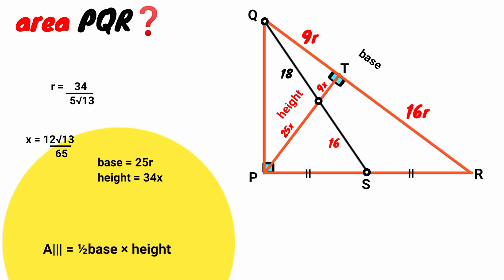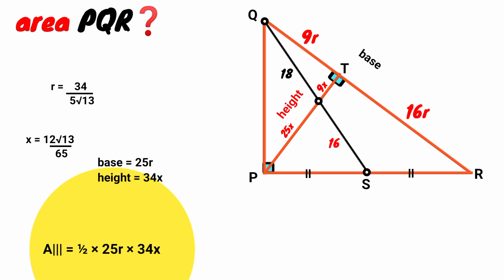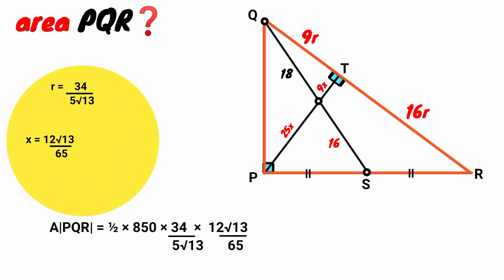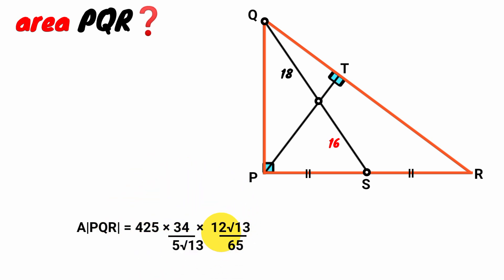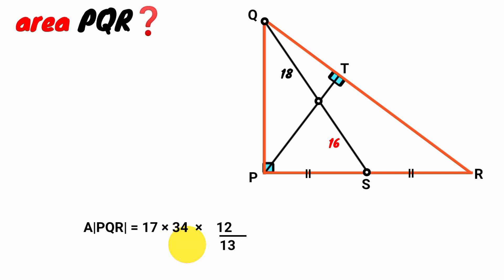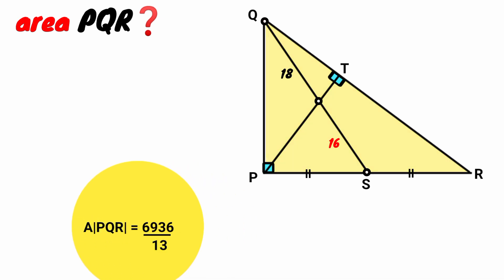The formula for area of a triangle is one-half times base times height. Substituting: one-half times 25r times 34x equals one-half times 850rx. We have the values of r and x. Substituting: one-half times 850 times (34 over 5 root 13) times (12 root 13 over 65). The root 13 terms cancel, one-half times 850 is 425, and 65 equals 5 times 13 so 5 times 5 is 25, giving 425 over 25 equals 17. Then 17 times 34 times 12 equals 6936. So the area of triangle PQR equals 6936 over 13 square units.